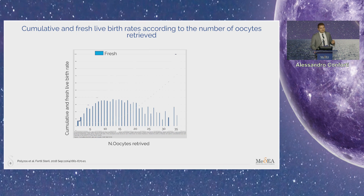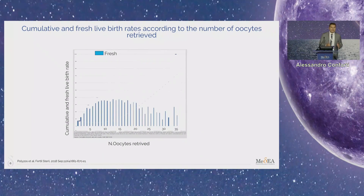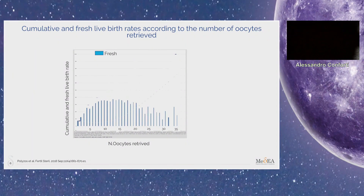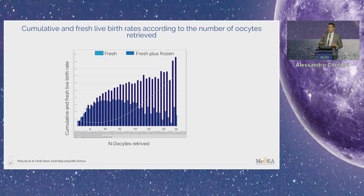Recently, this concept was superseded by the fact that we can now cryostore all eggs after ovarian stimulation. So we are moving from the idea of a live birth rate in a fresh cycle to the idea of a cumulative live birth rate, summing what we achieve from a fresh cycle and what we achieve from frozen cycles. Considering cumulative live birth rate, if we retrieve probably more than 15 oocytes, it could be fine to optimize the cumulative live birth rate.